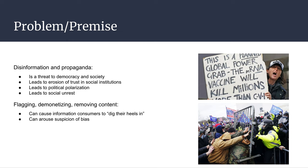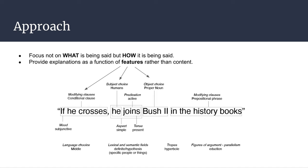Therefore, to earn the consumer's trust, disinformation and propaganda detection systems have to be explainable in ways that don't appear to take sides or arouse suspicion. We believe that one way of achieving that is by shifting the focus from what is being said to how it is being said — in other words, how language is used for the purpose of persuasion.